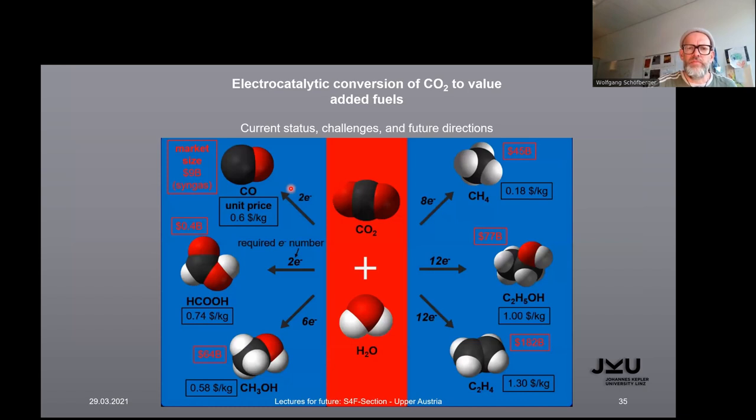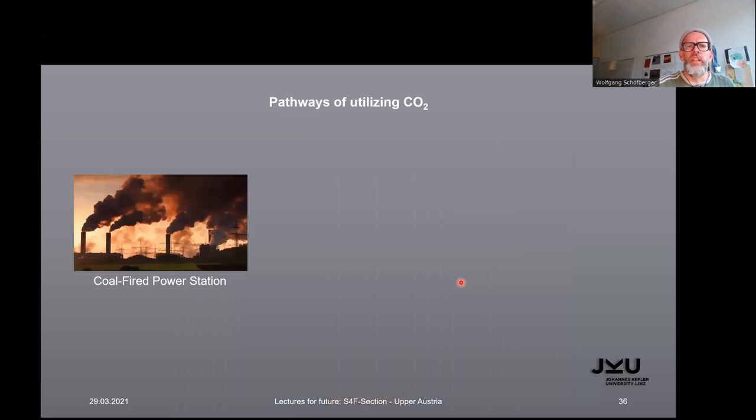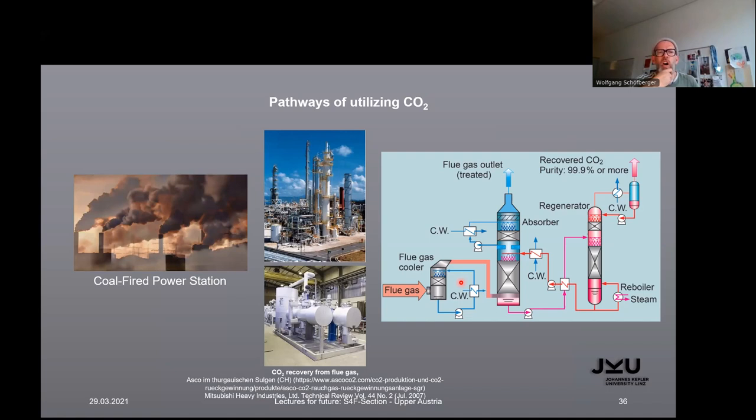You need to, as I said, activate the CO2 and treat this with water. By reduction with two electrons you go to carbon monoxide. Here you see the market sizes of these several compounds, for example, carbon monoxide or formate (formic acid), methanol, ethylene, ethanol, or methane. You see here on these reaction arrows the required electron number: two electrons for CO or formic acid, six electrons already for methanol, eight electrons for methane, 12 electrons for ethanol and ethylene.